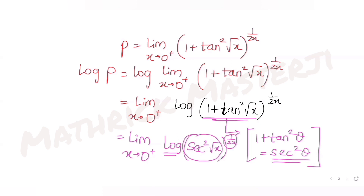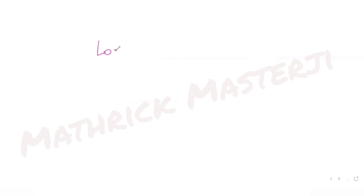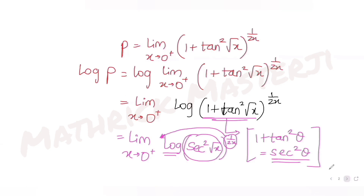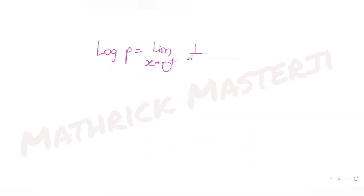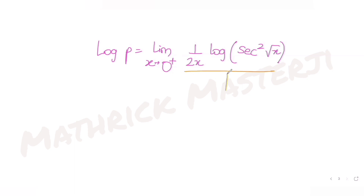Now using the logarithmic property log(a^b) = b·log(a), I can bring the exponent out in front. So it becomes: log p equals limit x tends to zero plus, (1 over 2x) times log of sec(√x).